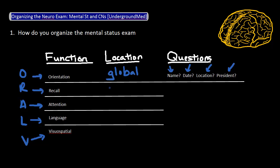Next, recall tests the temporal lobe, and I like to test this by asking the patient to remember three simple words — for example, apple, pen, and chair. I test immediate recall by asking the patient to immediately repeat the words to me. But I also tell the patient to keep these words in memory and ask them to repeat these words at the end of the mental status exam.